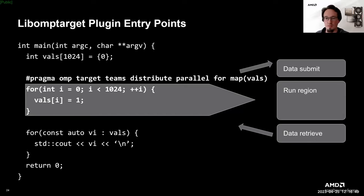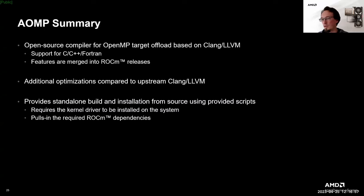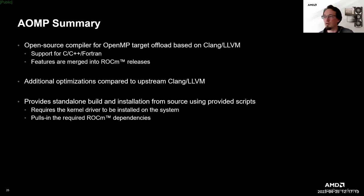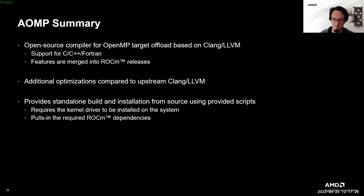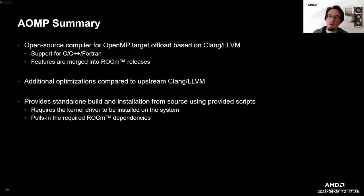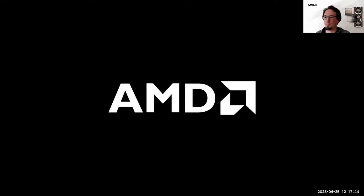I'm actually running almost over time, so let me wrap up. In summary, AOMP is an open source compiler for OpenMP target offload based on Clang/LLVM. It supports C, C++, and Fortran and is much more frequently merged to the public GitHub instance than ROCm releases. Features are typically merged into future ROCm releases. Compared to upstream LLVM, AOMP offers some more optimizations and features and we are actively working on reducing the delta and upstreaming more of the currently downstream-only changes. AOMP provides a standalone compiler that can be built using the scripts in the repository and only requires the KFD driver and libDRM to be installed, as it pulls in other required components and builds them from source. Thank you so much for your attention — I hope you found the information interesting. I'd like to open it up for questions.